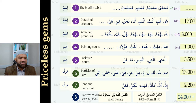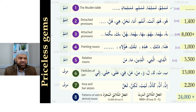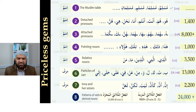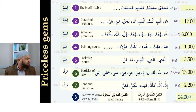In lesson 12 we did the pointing words. Now in this lesson we're going to do the relative nouns, and they appear about 3,500 times in the Qur'an. Lessons eight and nine gave us the murakab jari, which is almost 13,000 times in the Qur'an. Inna and her sisters we did in lesson 13. For book two we've left the derived nouns and verbs, which will give us lots of patterns — going up to 20,000 plus.